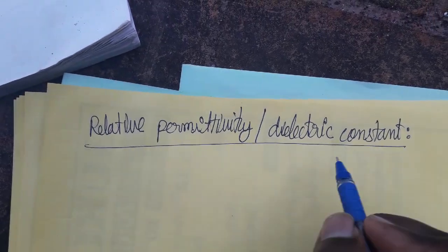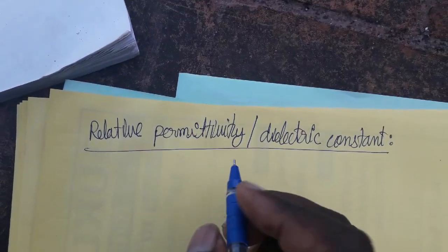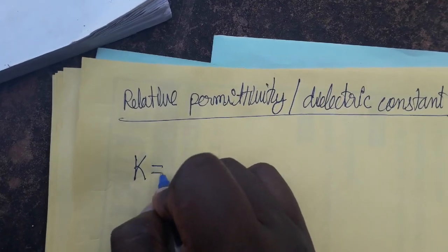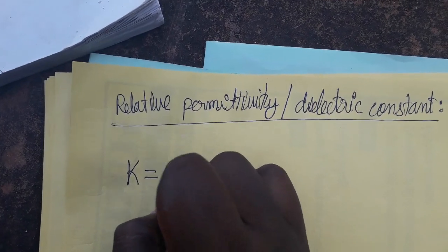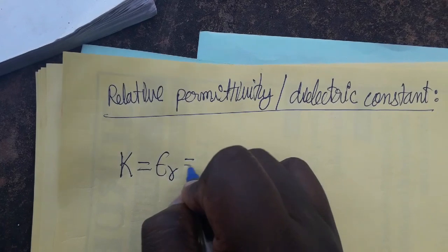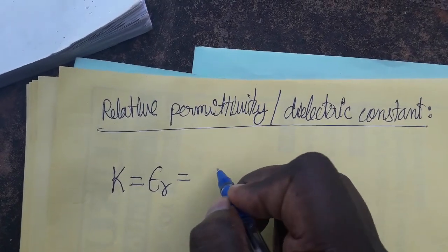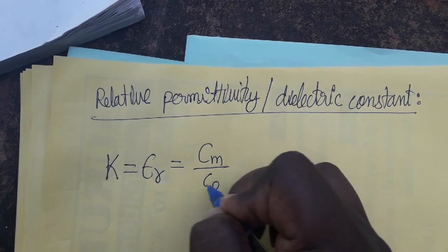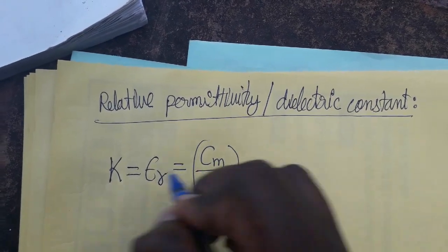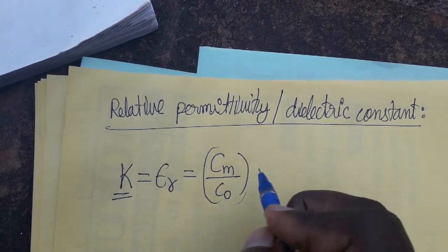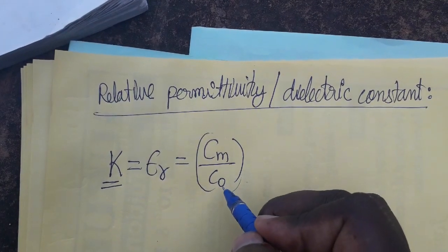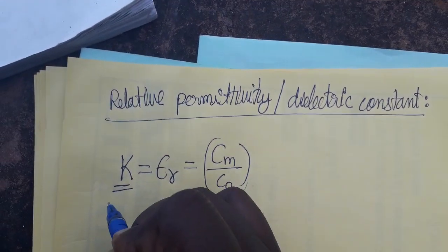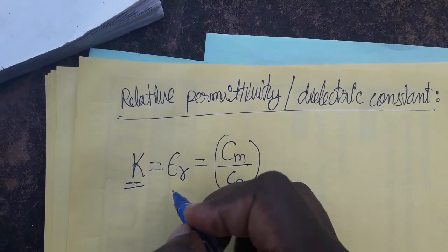Today we are going to see what is relative permeability and dielectric constant. We can take dielectric constant as k, and the same thing we can take as relative permeability. Dielectric constant is defined as the ratio of capacitance of a medium to capacitance of air.